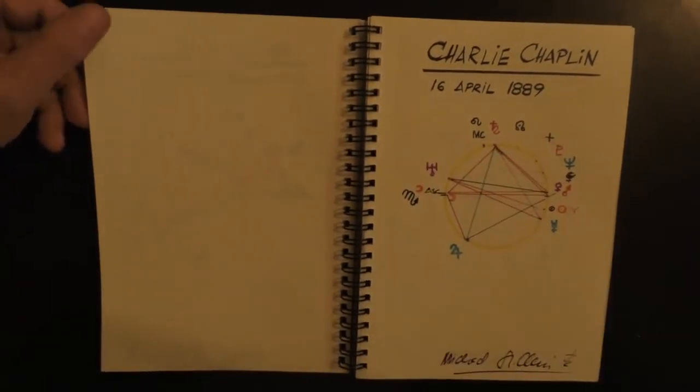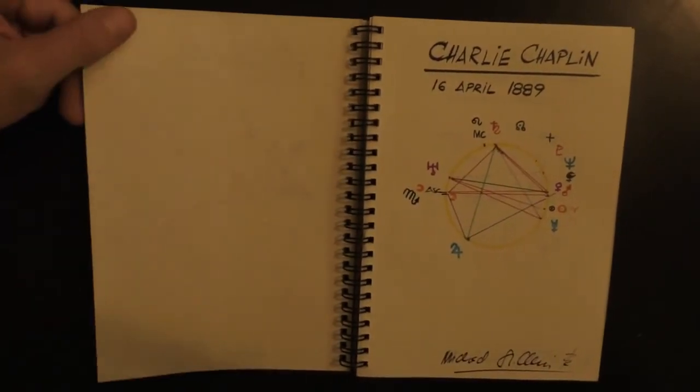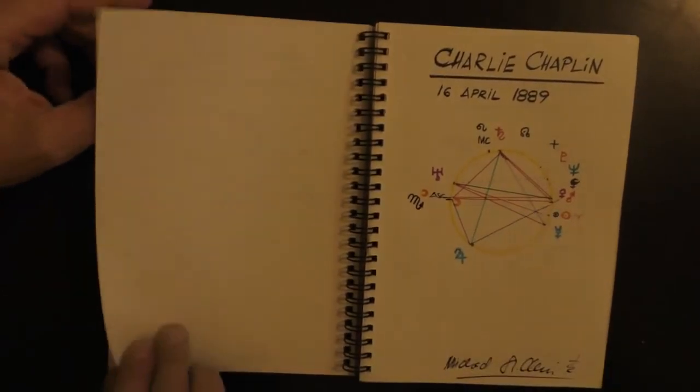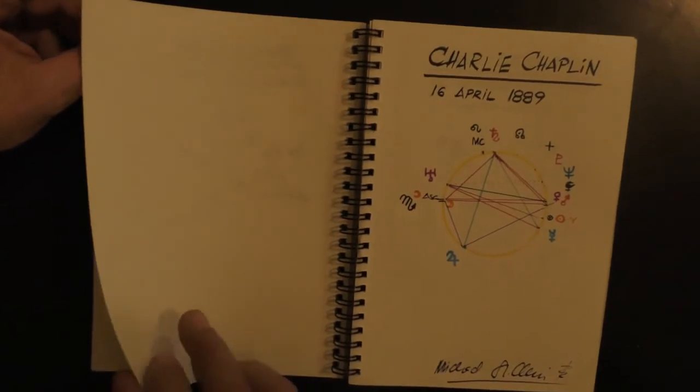And really, his chart is almost five-dimensional. See that pyramid coming out, the Venus-Mars conjunction. Everybody loved him, in love with him.